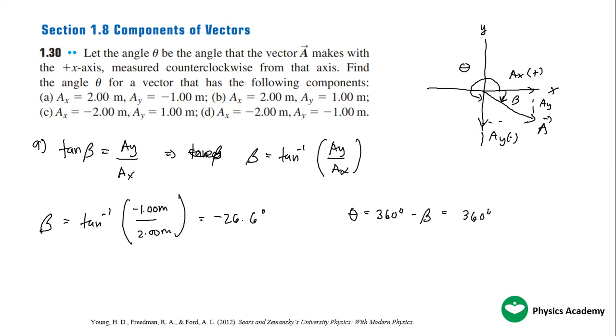If this angle here is 26.6, then you can calculate this theta. So theta is just equal to 360 degrees minus beta, which is 360 degrees minus 26.6 degrees.